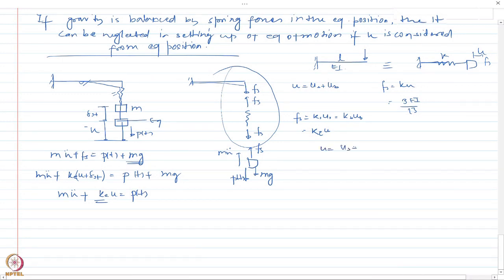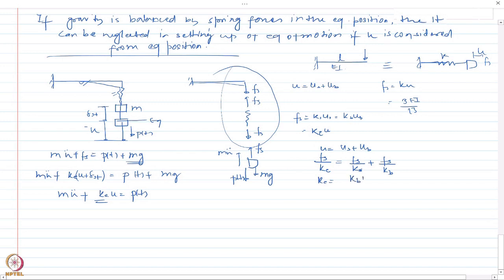To find K_e: since U = U_s + U_b, and U_s = F_s/K_s, U_b = F_s/K_b, we get: F_s/K_e = F_s/K_s + F_s/K_b. Therefore K_e = (K_b * K_s)/(K_b + K_s). Substituting this in gives the final equation of motion.